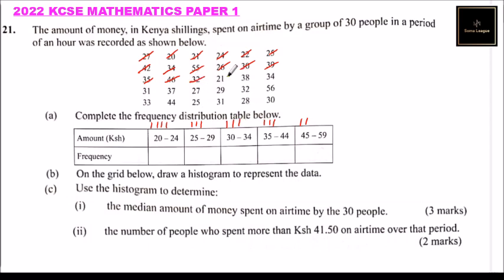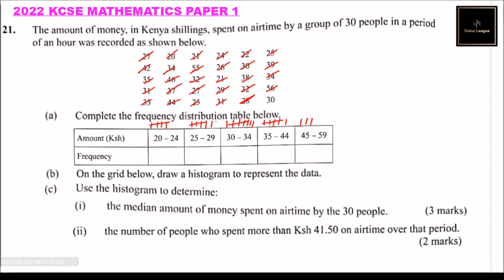39 goes here, 35 goes here, 46 goes here, 32 goes there, 21 goes here, 31 goes here, 37 goes here, 27 goes here, 27 again here, 29 here, 56 goes here, 56 again here, 35 here.